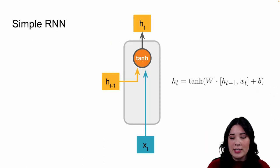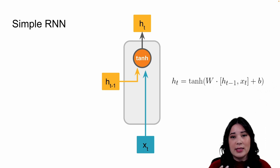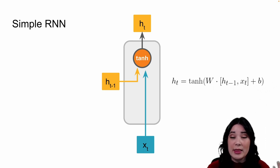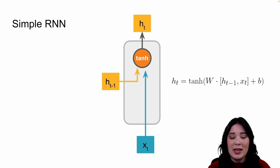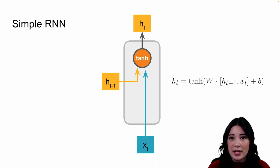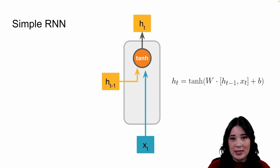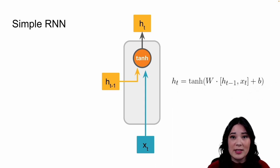In a simple recurrent architecture, to create a hidden state we take in some input — like a stock price or a word — and the previous hidden state if there is one. We combine them using weights and a bias, then send everything through a hyperbolic tan activation function, which squishes values between negative one and positive one. The resulting output is our new hidden state, which could be our final output or could be fed to the next cell in the series.